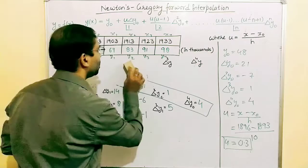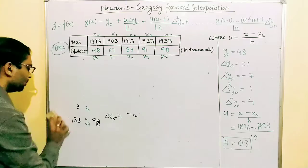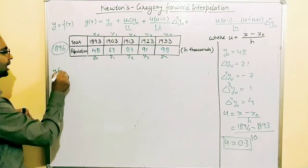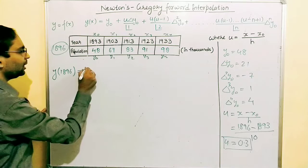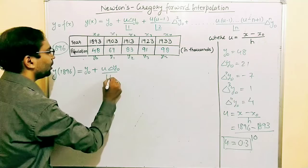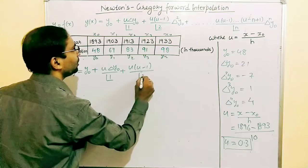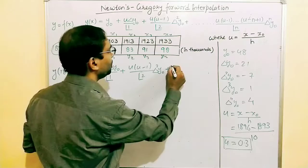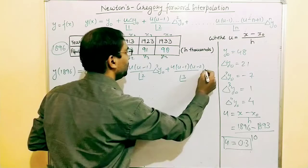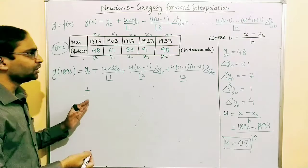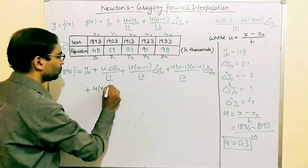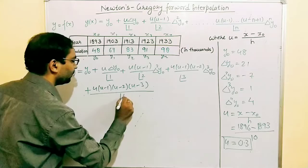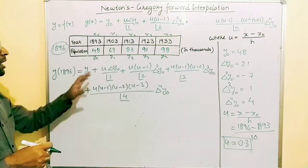Now let us substitute these values into the formula. y(1896) = y0 + u·Δy0/1! + u(u−1)/2!·Δ²y0 + u(u−1)(u−2)/3!·Δ³y0 + u(u−1)(u−2)(u−3)/4!·Δ⁴y0. We write only up to the Δ⁴y0 term because we have only 5 data items.